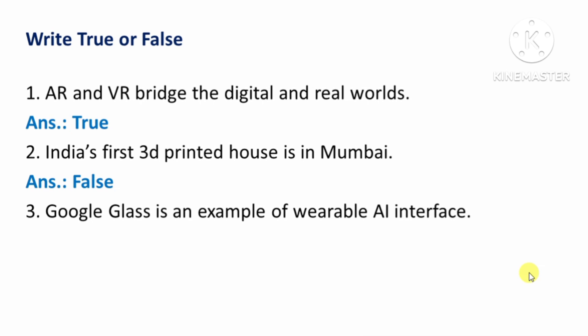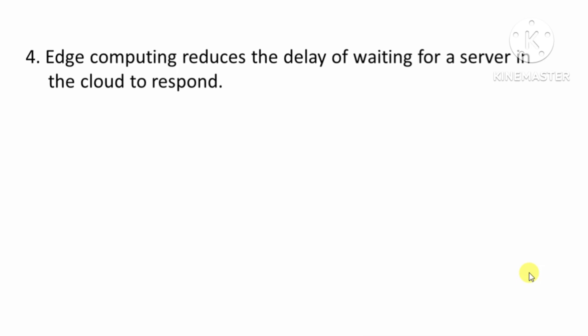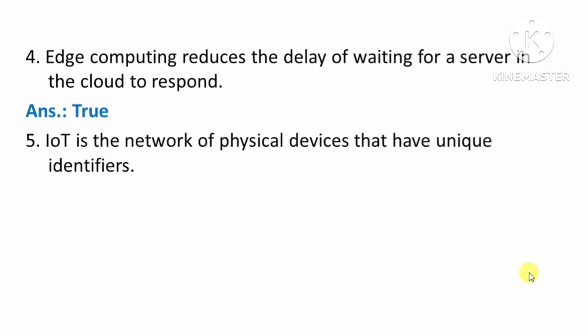Next question: Google Glass is an example of a wearable AI interface — it's False. Next question: Edge computing reduces the delay of waiting for a server in the cloud to respond — it's True. Next question: IoT is the network of physical devices that have unique identifiers — it's True.